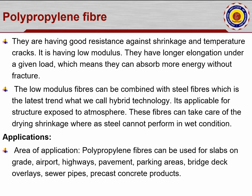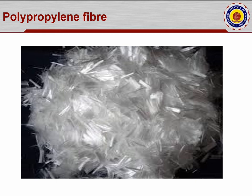Polypropylene fibers can handle drying shrinkage, whereas steel cannot perform well in wet conditions. Using two different fibers allows them to work in alternate conditions — both dry and wet — so whatever the condition, the fiber adapts and gives good results. Applications include slabs on grade, airport highways, pavement, parking areas, bridge decks, sewer pipes, and precast concrete products. The polypropylene fiber is equal to the diameter of a hair — that fine in shape.